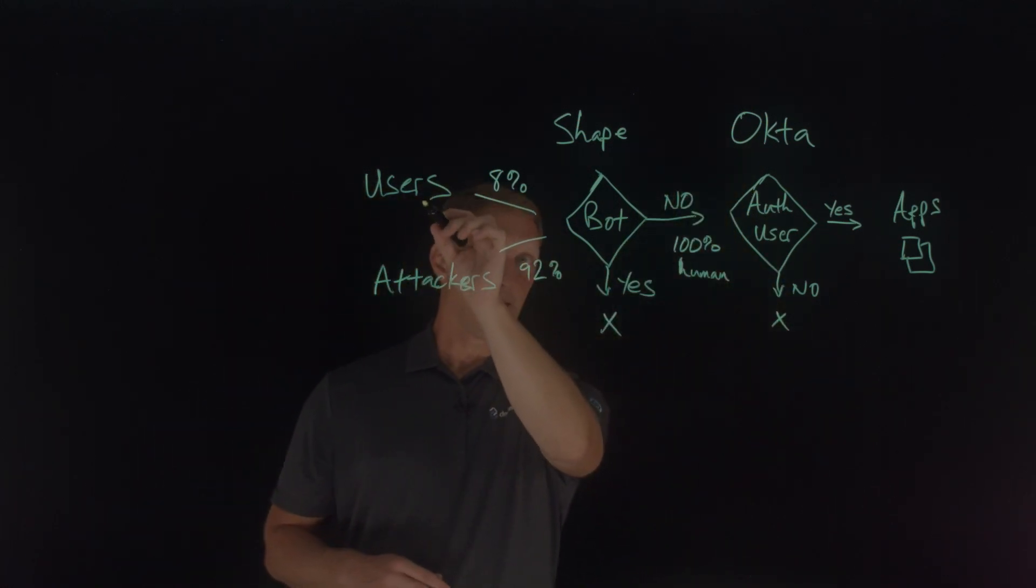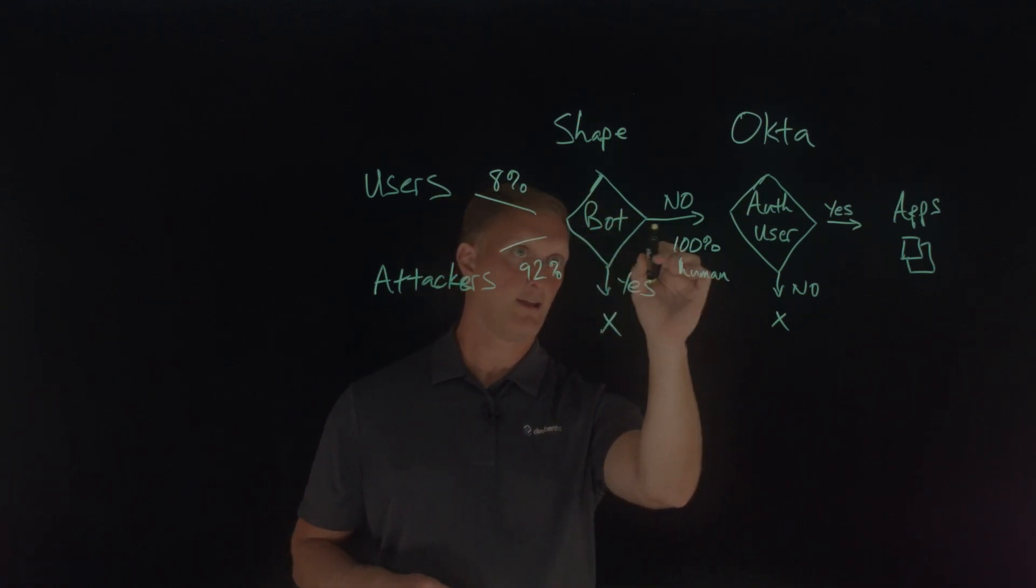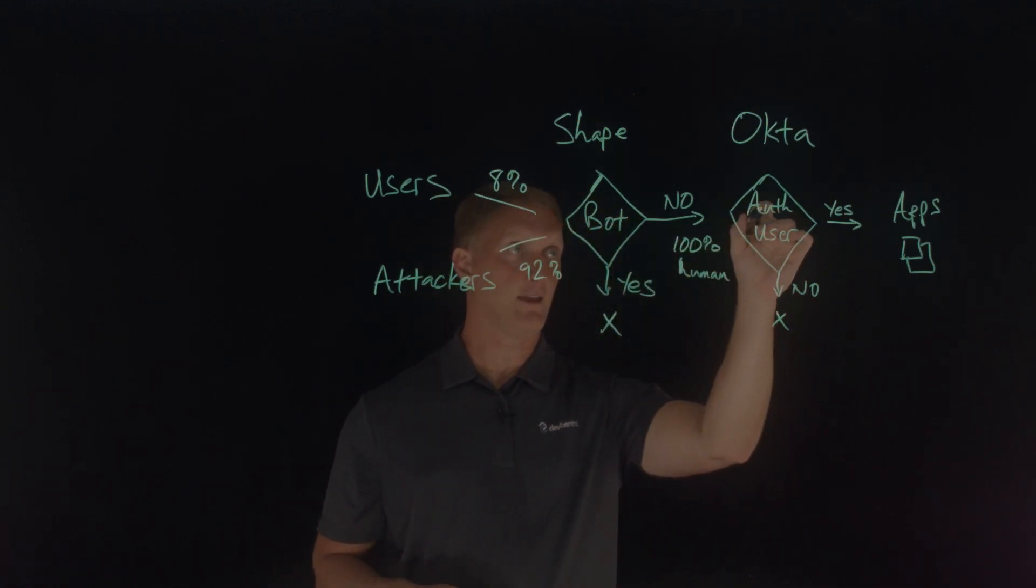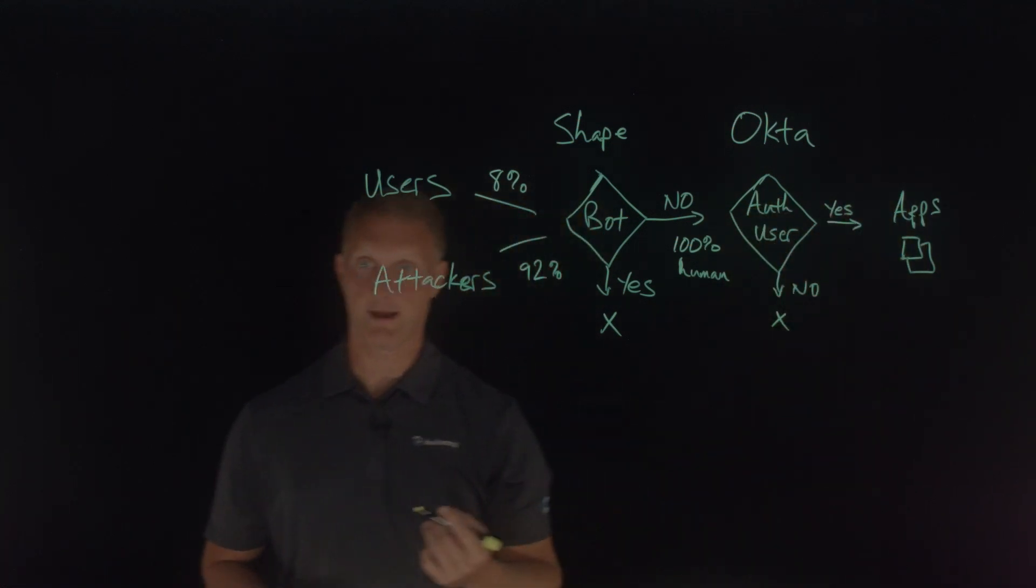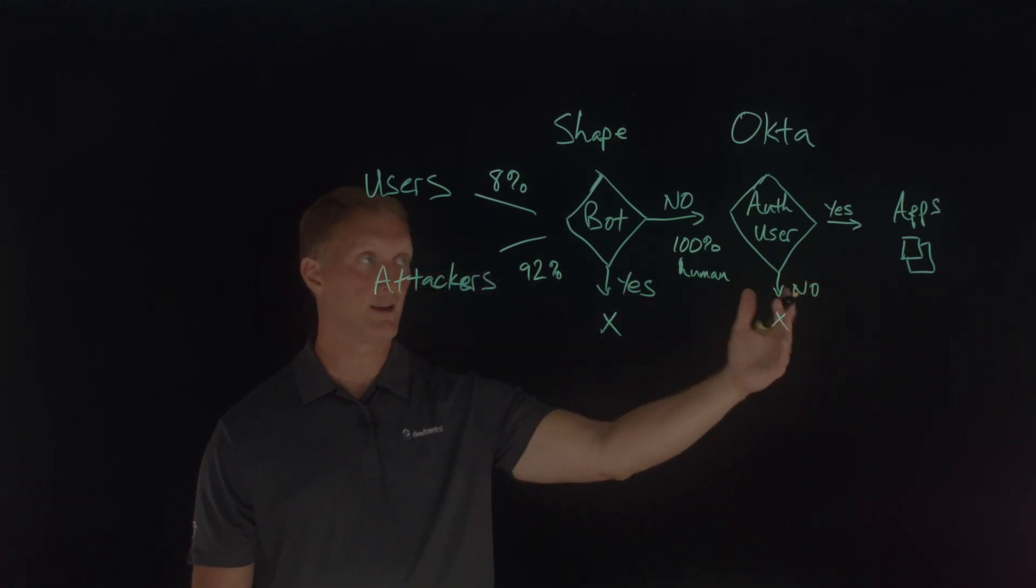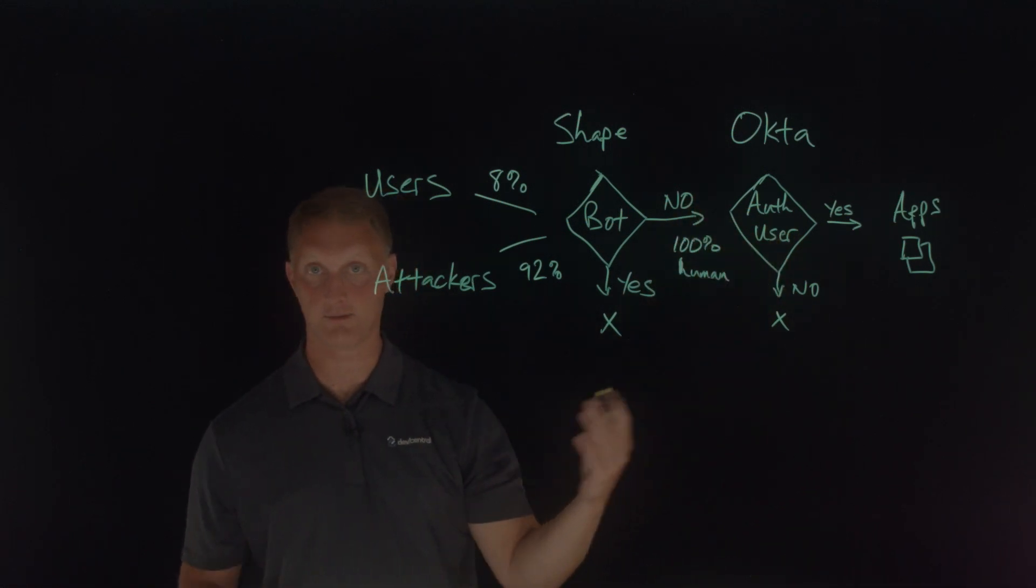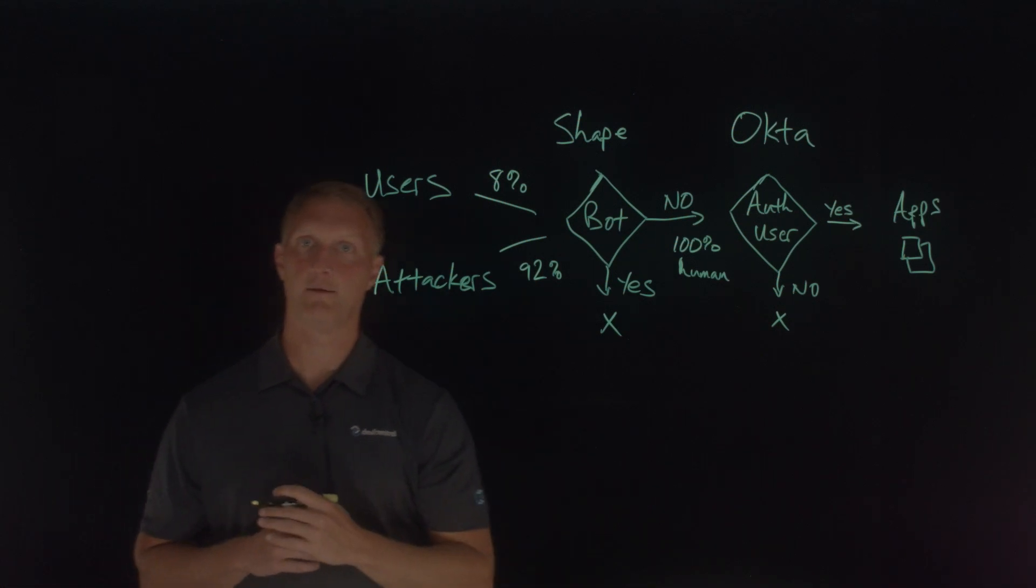All right. So if the legitimate user comes through, makes it through the Shape checks and they're not a bot, and then they get authenticated here at Okta, then they make it back to the application. And so that's the way that this solution is put together, and that allows only legitimate human authenticated authorized users to access the applications, which is exactly what you want.